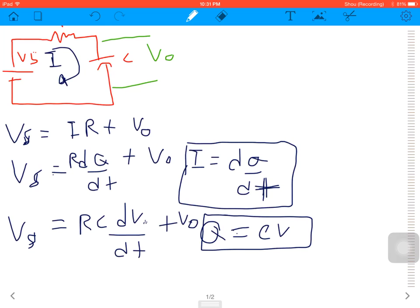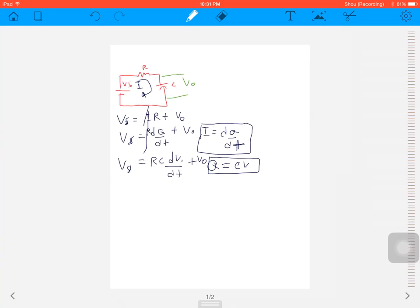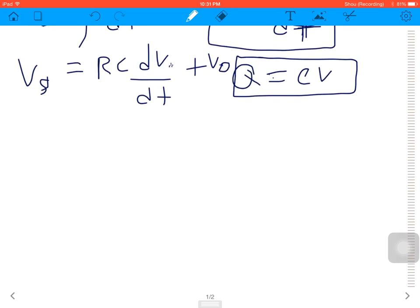And next, I will multiply dt in every term, and we got VS dt equals RC dV plus V out dt like this.